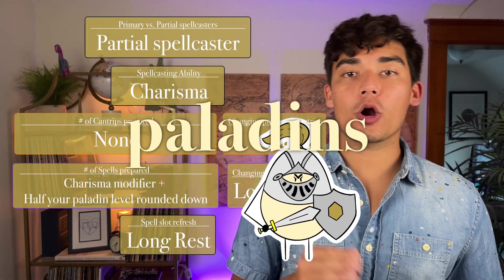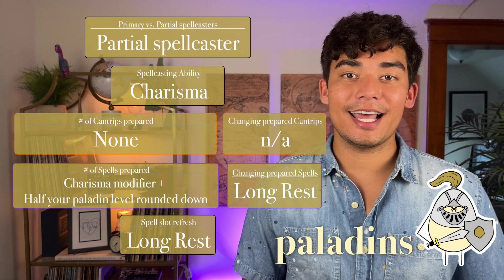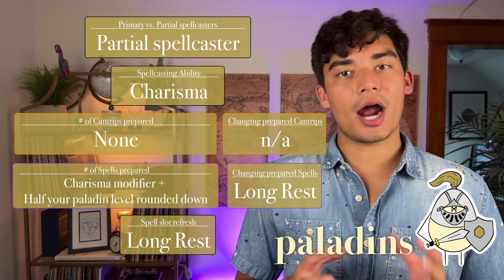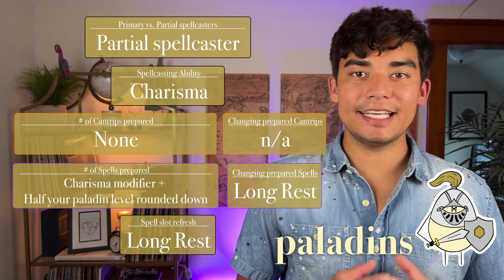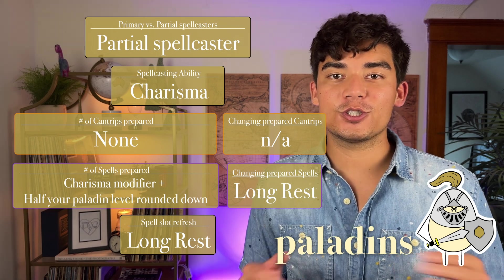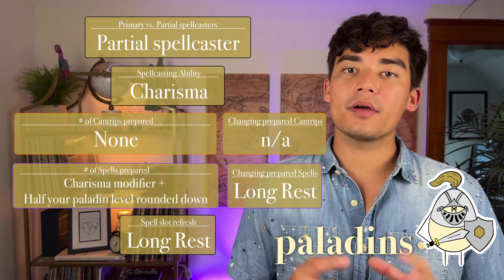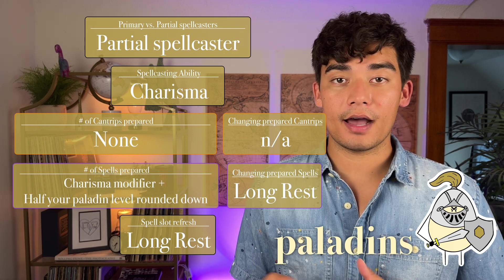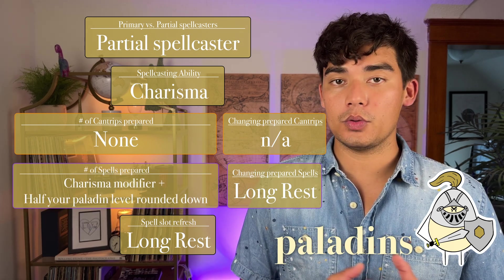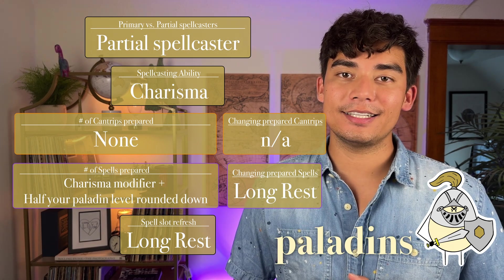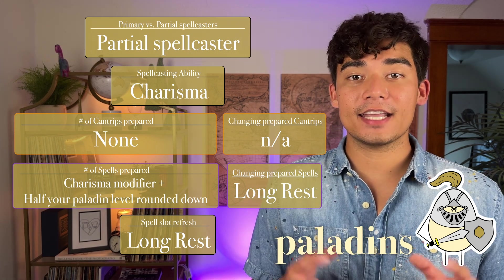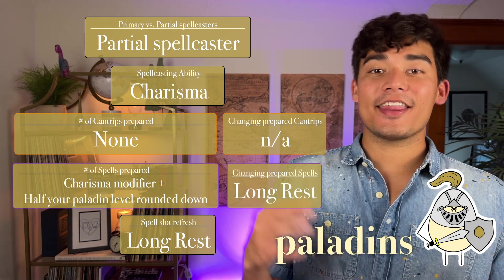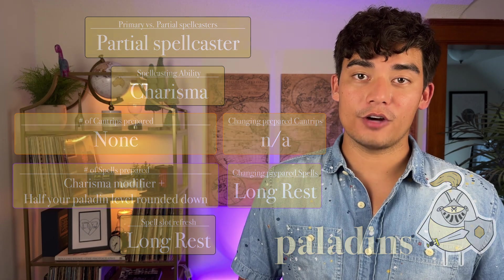Paladins are partial spellcasters, meaning they get access to level 1 through 5 spell slots as they level up. Their spellcasting ability is charisma, and paladins don't get access to any cantrips. The number of spells a paladin can prepare is their charisma modifier plus half of their paladin level rounded down. They can change their prepared spells after a long rest, and spell slots refresh after a long rest.